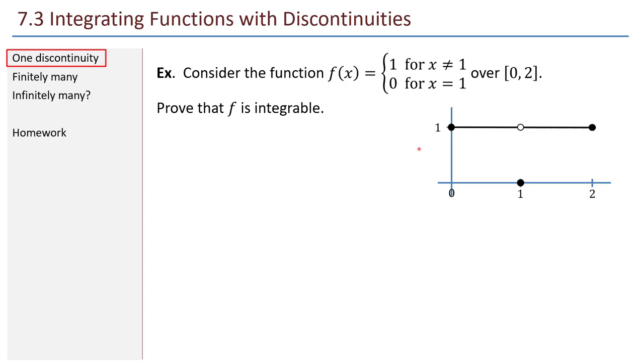What do we need to do in order to show that a function is integrable? Given an epsilon greater than 0, we must find a partition so that the upper sum of the function over the partition minus the lower sum of the function over the partition is less than epsilon. How do I find such a partition?